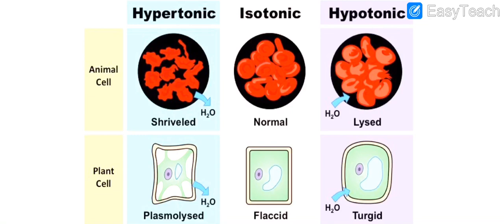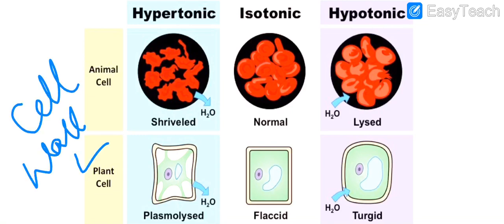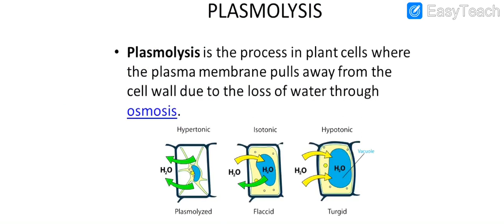In hypertonic solution, the animal cell will shrink and in the plant cell plasmolysis will take place. This difference exists because the plant cell has a cell wall whereas the animal cell lacks a cell wall. So in hypertonic solution, animal cell shrinks and plant cell undergoes plasmolysis. In isotonic solution, animal cell remains normal and the plant cell becomes flaccid. In hypotonic solution, the animal cell bursts and dies, whereas the plant cell won't burst because of the cell wall.